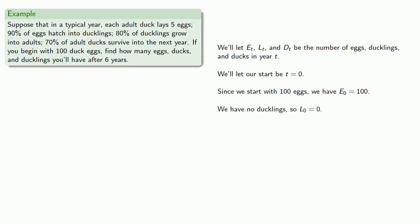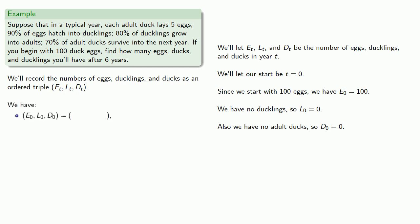We have no ducklings, so the number of ducklings in year zero is going to be zero. And we have no adult ducks, so D_0 is also equal to zero. Now we'll record the number of eggs, ducklings, and ducks as an ordered triple: eggs, ducklings, ducks. And so we have (E_0, L_0, D_0), that's (100, 0, 0).